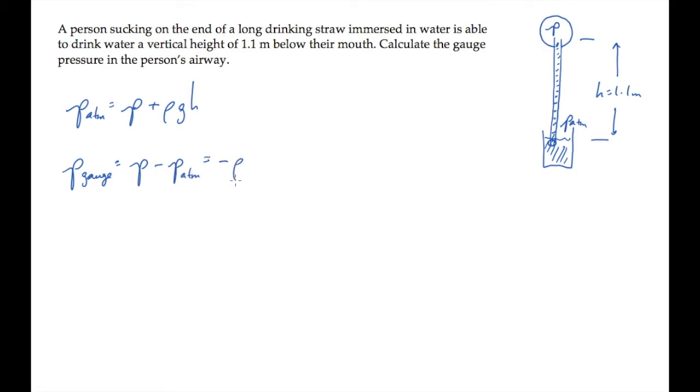From above we see that this equals minus rho gh, the negative sign telling us the absolute pressure is lower than atmospheric pressure. There's a partial vacuum in the person's airway.